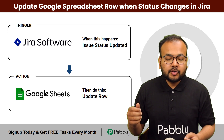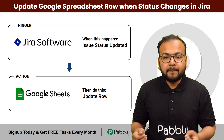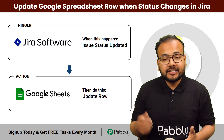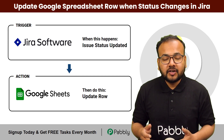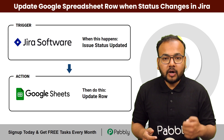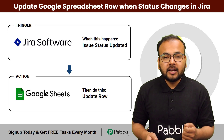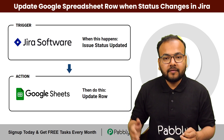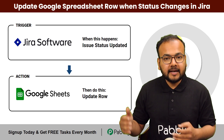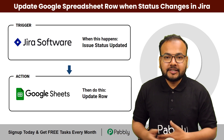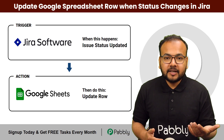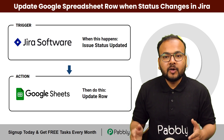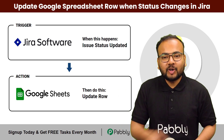In this video, I am going to show you a step-by-step process of setting up an integration between Google Sheets and Jira, so that whenever you update any issue in Jira, the corresponding row in Google Sheets for that issue will be automatically updated. We can set up this automation without any coding, just by a few clicks. So let's set up this automation together.